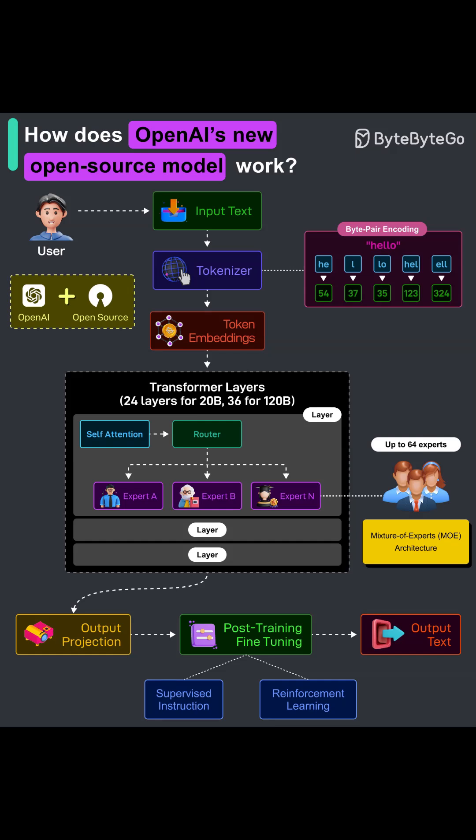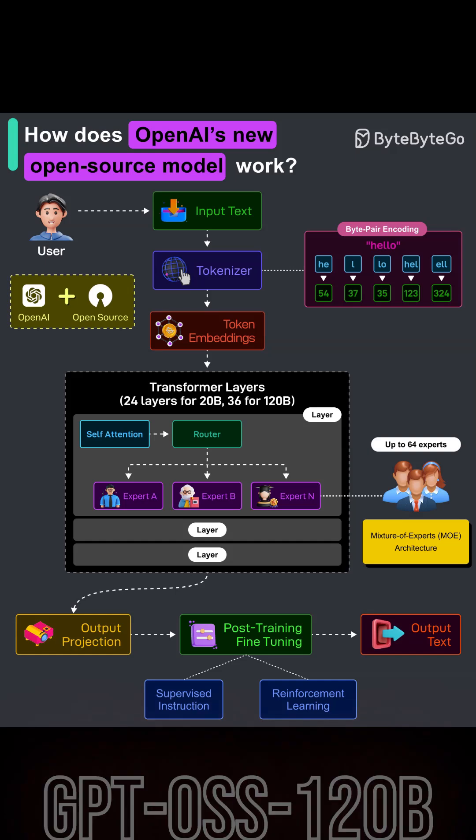Those embeddings flow into stacked transformer layers, the core compute engine. In the 20B model there are 24 layers; in the 120B model there are 36. Each layer contains two key components: self-attention and a feed-forward path. Self-attention lets the model look across the entire sequence to understand relationships — what modifies what, which terms depend on others, and how context influences meaning.